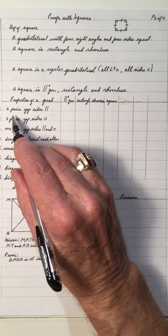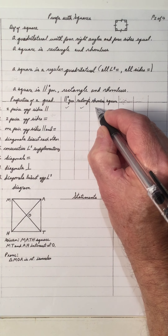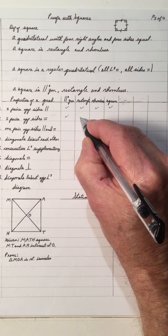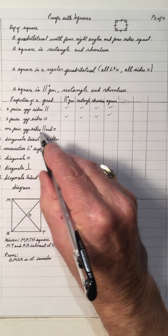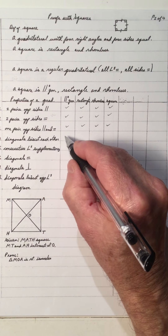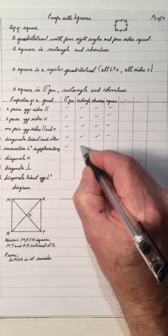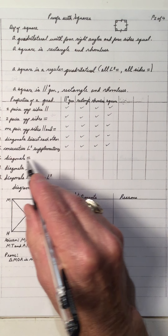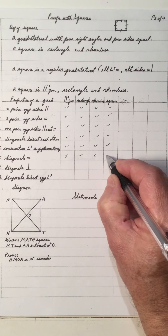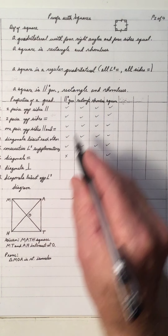Two pairs of opposite sides parallel — true for a parallelogram, rectangle, rhombus, and square. Two pairs of opposite sides equal — true for each one. One pair of opposite sides equal and parallel — true for all. The diagonals bisect each other — true for all four. Consecutive angles are supplementary — true for all four. Diagonals are congruent: no for parallelogram, yes for rectangle, no for rhombus, yes for square. So diagonals are equal only when you have right angles.